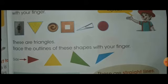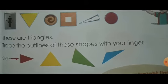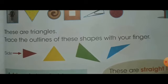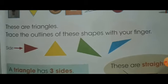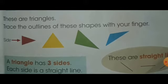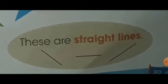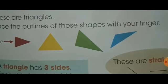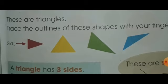Here you can see there are different types of triangles. These are all triangles. Trace the outlines of these shapes with your finger. A triangle has three sides. Each side is a straight line. These are all straight lines. Here you can see the outline of triangles are straight lines.